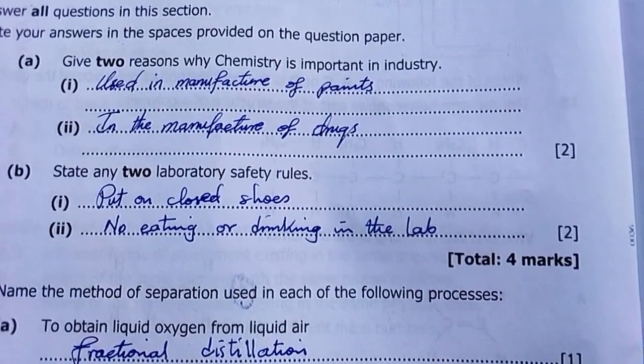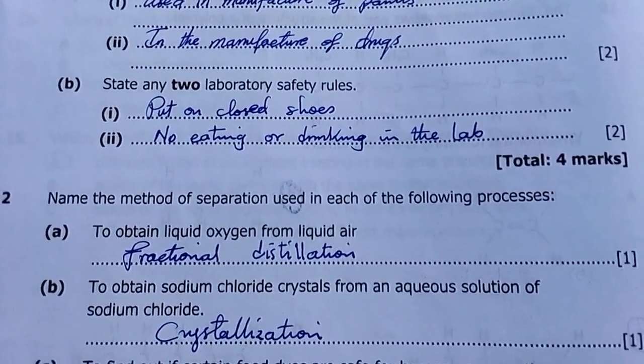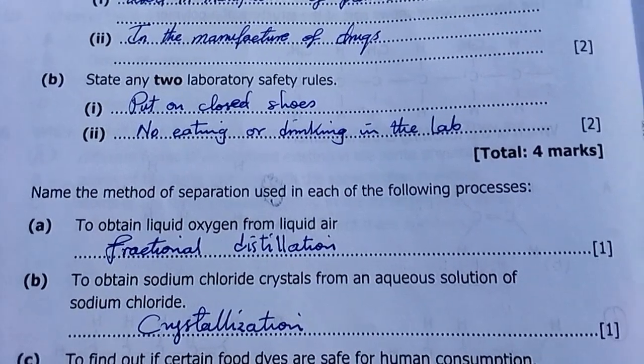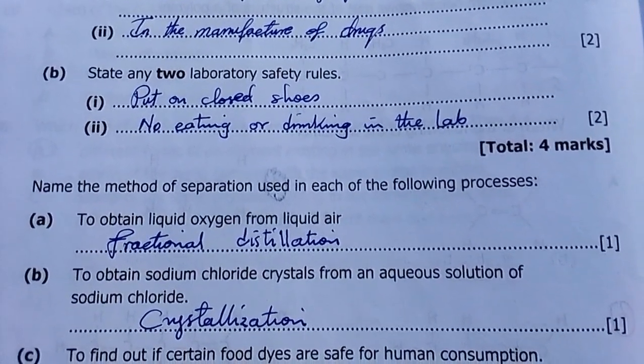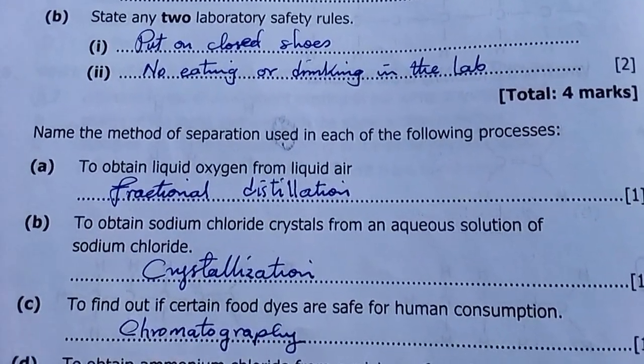Part B: State any two laboratory safety rules. Put on closed shoes, no eating or drinking in the lab. Number 2: Name the method of separation using each of the following processes.